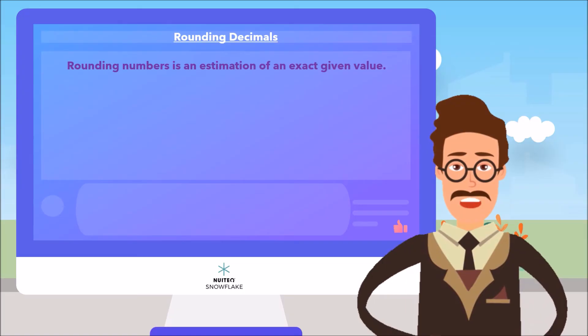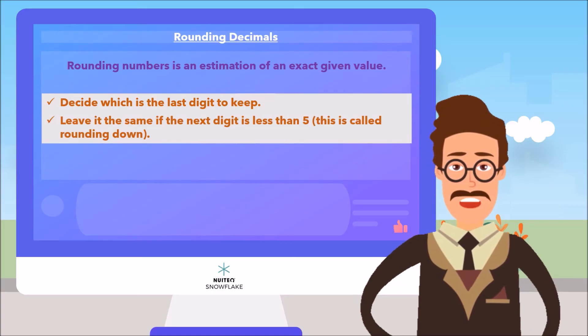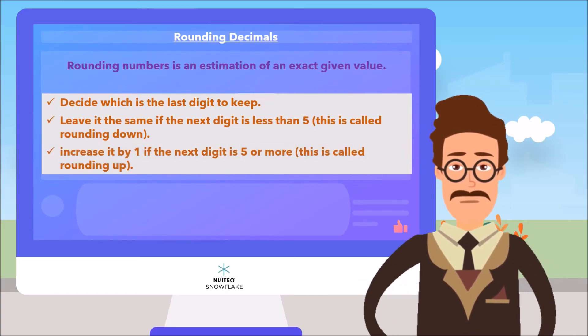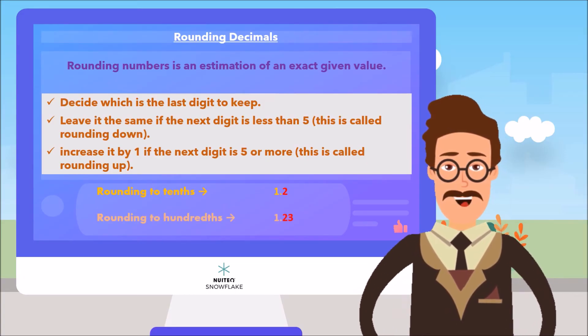Now, if we want to round decimals, decide which is the last digit to keep. Leave it the same if the next digit is less than 5, this is called rounding down. And increase it by 1 if the next digit is 5 or more, this is called rounding up. Rounding to tenths means to leave one number after the decimal point. Rounding to hundredths means to leave two numbers after the decimal point.